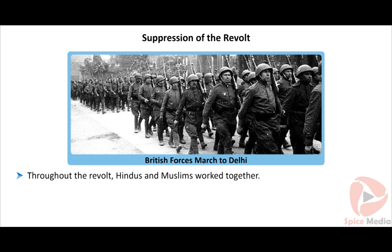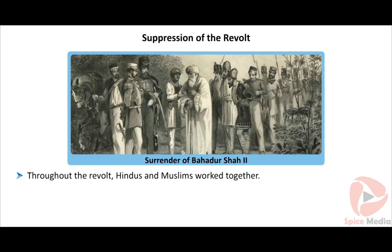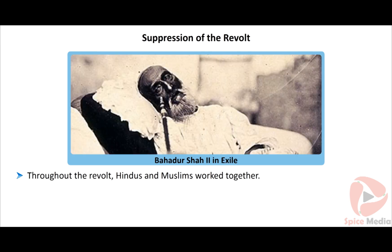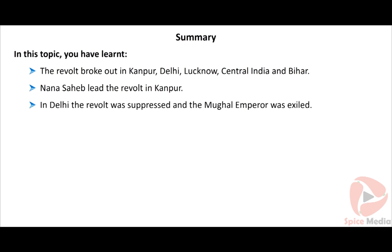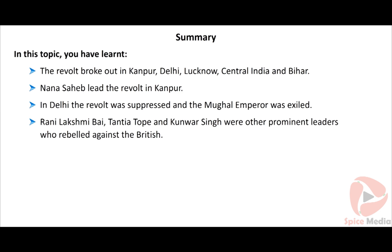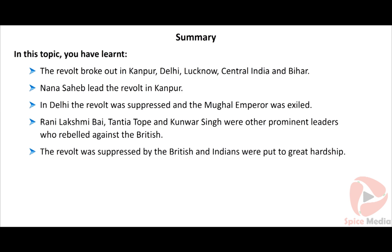Suppression of the revolt: In September 1857, Delhi was recaptured by the British. Bahadur Shah was taken prisoner and sent to Rangoon in Burma, where he died in 1862. His three sons were captured and shot dead by the British. Awadh was recaptured by the British in September 1858. Throughout the revolt, Hindus and Muslims worked together.